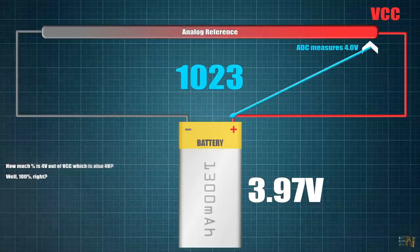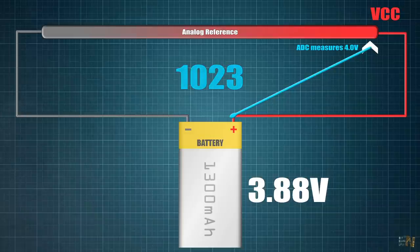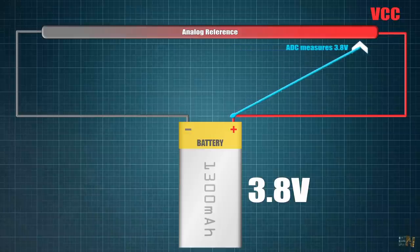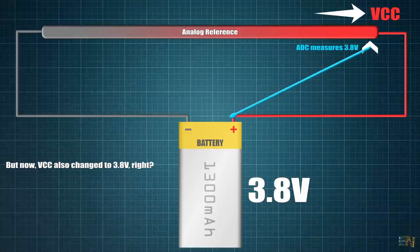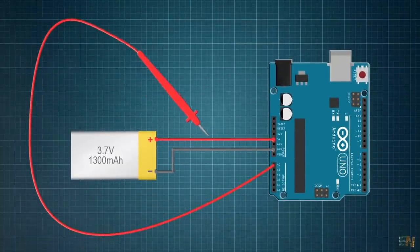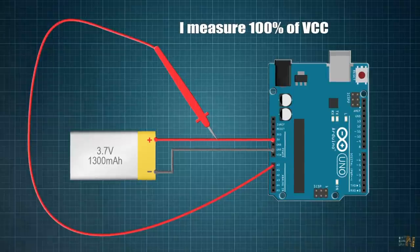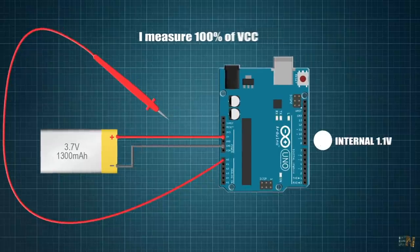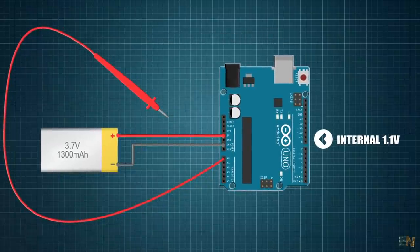But let's say that after a while, the battery voltage decreased to 3.8V. So now we measure with the ADC 3.8V. But the VCC is also 3.8V. So the analog read will give us maximum once again. So you see the problem? Without using an external voltage reference, the Arduino would think that the battery is always full.